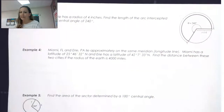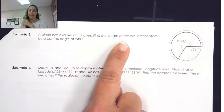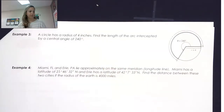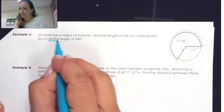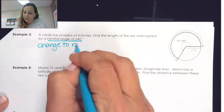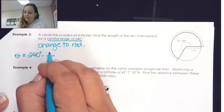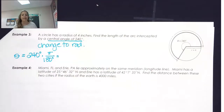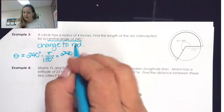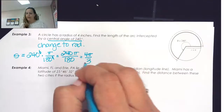Let's look at example 3. A circle has a radius of 4 inches, and we want the length of the arc intercepted by a central angle of 240 degrees. Since theta must be in radians, we need to change 240 degrees to radians by multiplying by pi over 180. We get 240π over 180, which simplifies to 4π over 3.